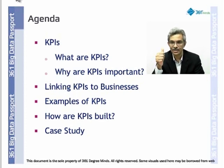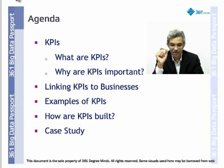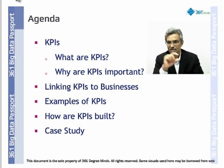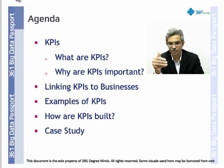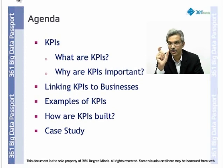As a data engineer, data architect, or data strategist, you will define some KPIs which are more data-related. For example, if you want to create a KPI for customer satisfaction survey, the data engineer, architect, or strategist will decide what constitutes customer satisfaction — a scale of 1 to 5, scale of 1 to 10, scale of 5 to 10, scale of 10 to 1. That's what a data engineer will define.